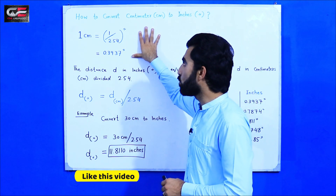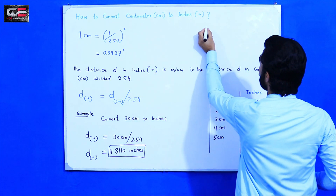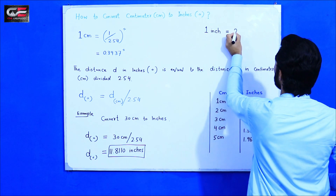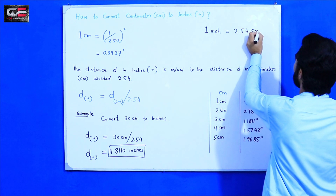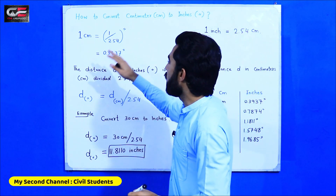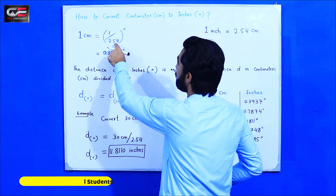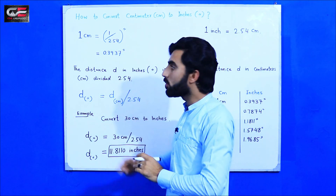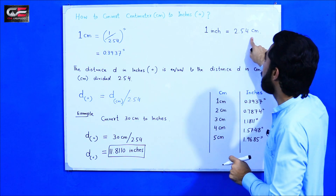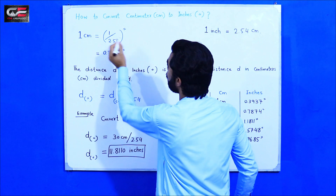This is the formula to convert centimeter to inches. First, remember that one inch equals 2.54 centimeters. So if you want to convert centimeter to inch, one centimeter is equal to 1 divided by 2.54 inches — because one inch equals 2.54, we divide one centimeter by 2.54.